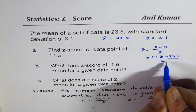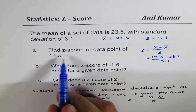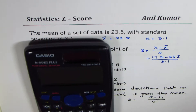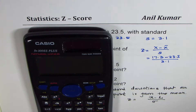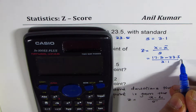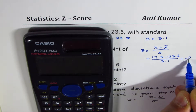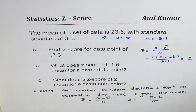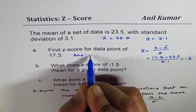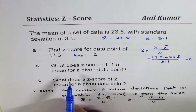We substitute 17.3 for x: z equals 17.3 minus 23.5 divided by 3.1. Since this is on the left side of the mean, we expect a negative answer. Calculating: 17.3 minus 23.5 divided by 3.1 gives a z-score of minus 2. So the answer is minus 2.